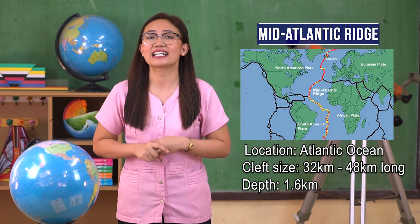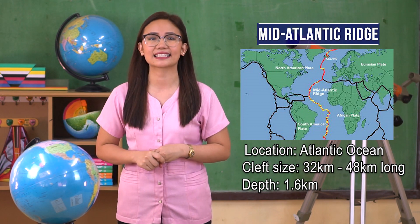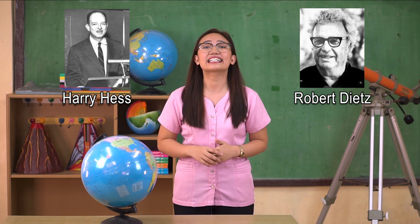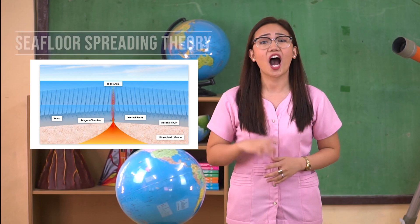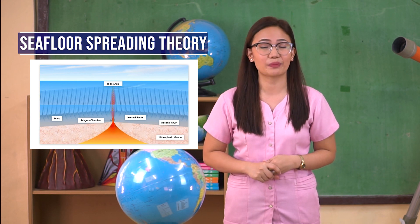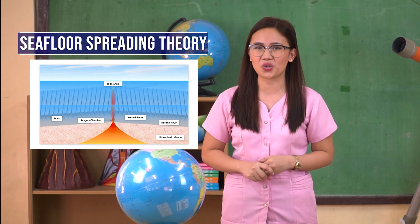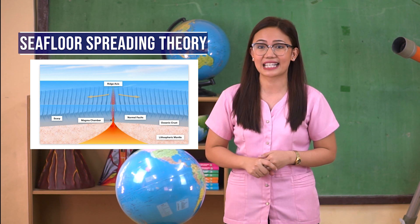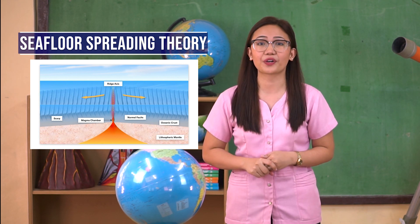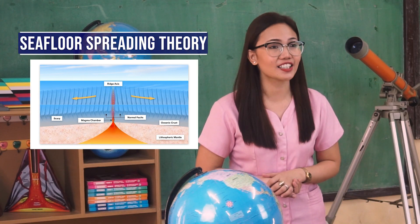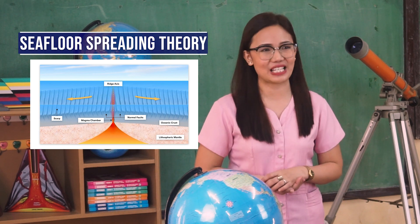In the early 1960s, scientist Harry Hess, together with Robert Dietz, suggested an explanation for continental drift — the seafloor spreading theory. According to this theory, hot, less dense material from below the Earth's crust rises toward the surface at the mid-ocean ridge. This material flows sideways, carrying the seafloor away from the ridge and creating a crack in the crust. The magma flows out of the crack, cools down, and becomes the new seafloor.